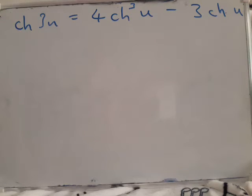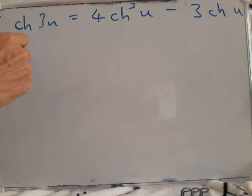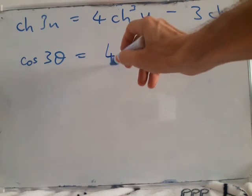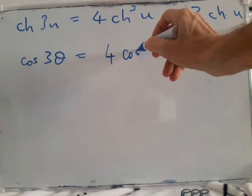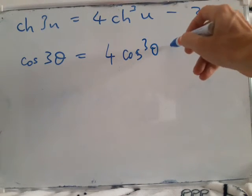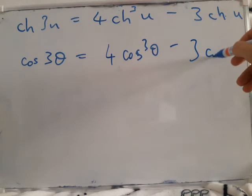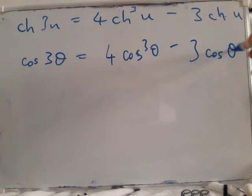Proving hyperbolic identities like this is very straightforward using Osborne's rule. We've already seen that the equivalent identity cos 3θ = 4cos³θ − 3cosθ.